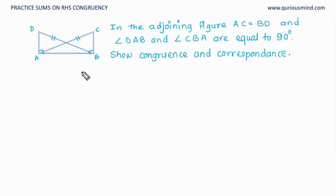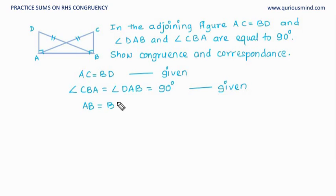So the given is AC equals BD and angle CBA equals angle DAB equals 90 degrees. Now we see that AB equals BA. It's a common side between these two triangles.